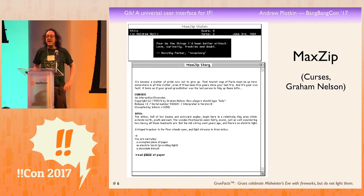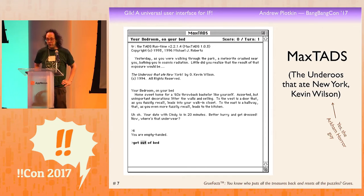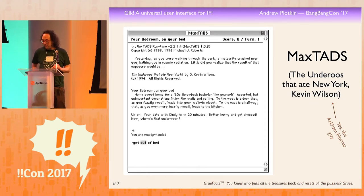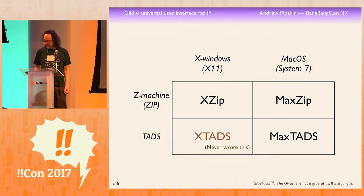I also started writing IF games at that point using an open-source tool called Inform, which targeted the Z-machine. Next port was a Mac port of TADS — TADS is a different open-source IF development system. It had its own interpreter and engine for playing the games. So I took the Mac display code and stuck it on top of the TADS interpreter, and I got a new engine which I called MacZip. At this point, you've got these things, and clearly there's an opportunity to modularize.